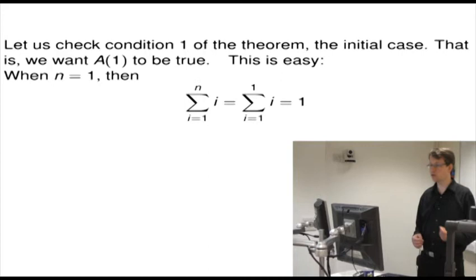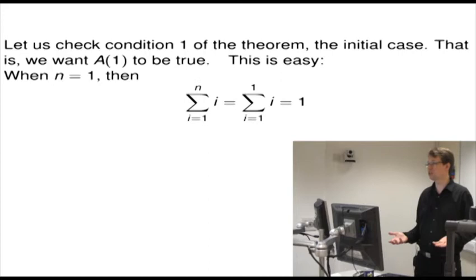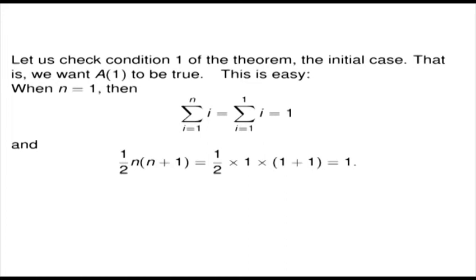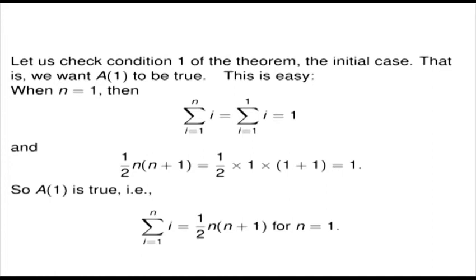This is particularly easy. When n equals 1, the sum from i equals 1 up to 1 — we're just summing the first 1 number, which is 1. So the left-hand side of the equation is 1. On the right-hand side, we want one half of n times n plus 1, which equals one half times 1 times 2, which is also 1. So we've shown that the left and right-hand sides are equal, and A1 is true. We've only checked it for n equals 1.